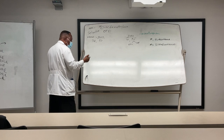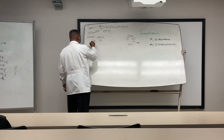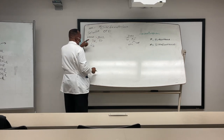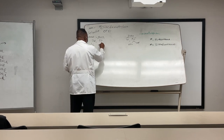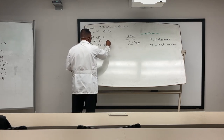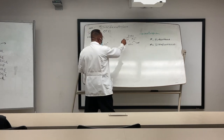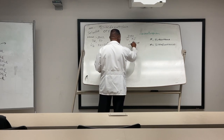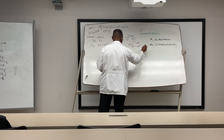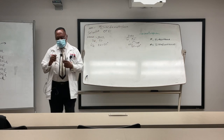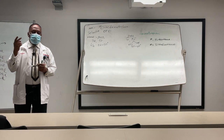The half-life for fluconazole is about 20 to 50 hours. For itraconazole, it is about 30 to 40 hours. Itraconazole is generally administered on a BID basis; fluconazole can be given once daily.